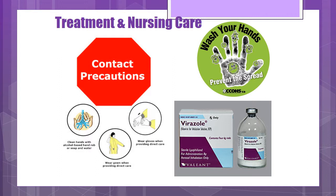Monitor IV therapy. They may need to be NPO due to respiratory status, so IV hydration is critical. Record intake and output and take a daily weight to detect any signs of dehydration. Medications can include inhaled bronchodilators, though they may not be effective. Antihistamines and corticosteroids are not effective. Racemic epinephrine administration can improve condition modestly. Nebulized hypertonic saline may decrease length of hospital stay and improve mucociliary clearance.